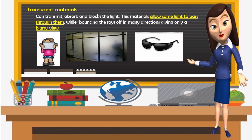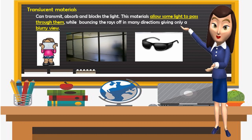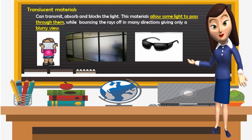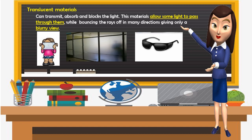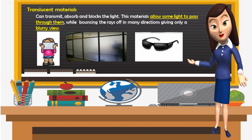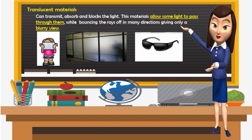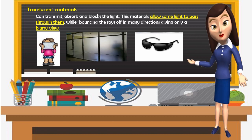Translucent materials can transmit, absorb, and block light. These materials allow some light to pass through them while bouncing rays off in many directions, giving only a blurry view. Examples include frosted glass and sunglasses.